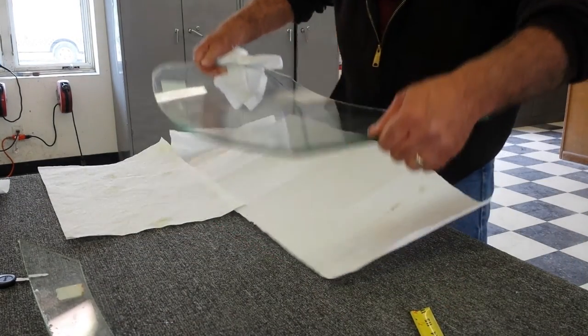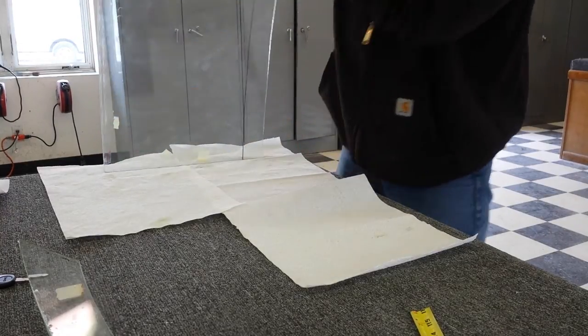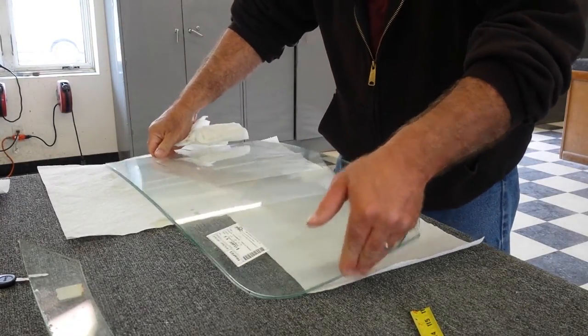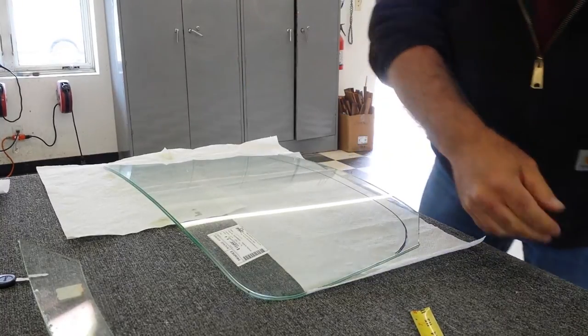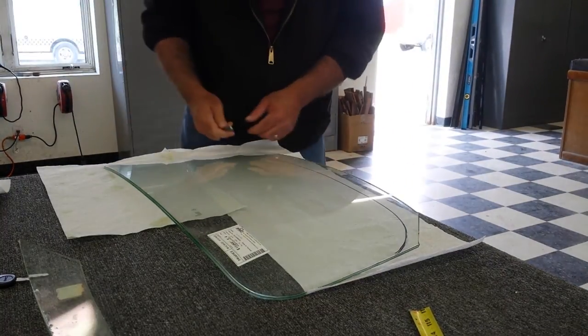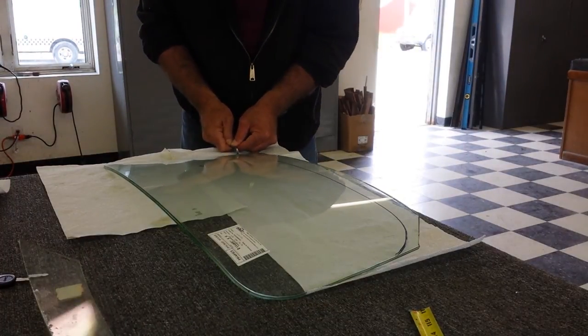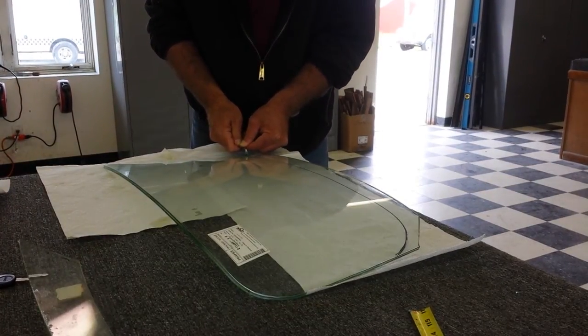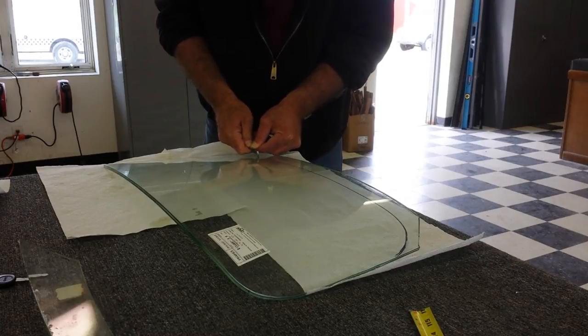So we've still got our nice black line that the body man made us. I'm going to flip her over here so you can see it. I'm going to take our cutter. I'm going to dip it in oil again. We're going to stay just on the inside of our black line and roll right down there just nice and steady.